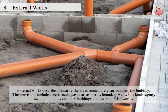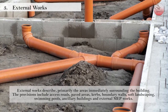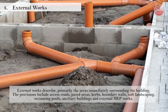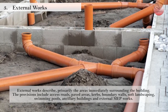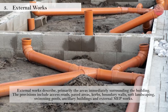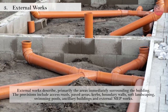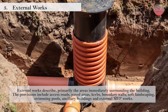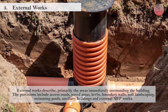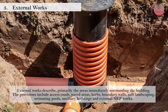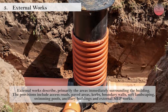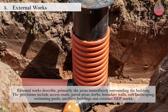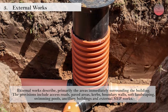External works describe primarily the areas immediately surrounding the building. The provisions include access roads, paved areas, curbs, boundary walls, soft landscaping, swimming pools, ancillary buildings, and external MEP works.